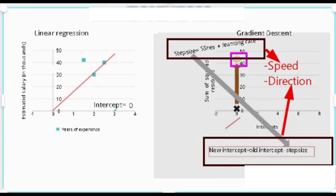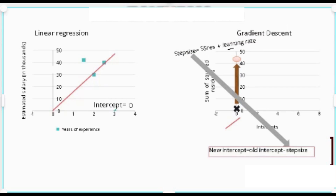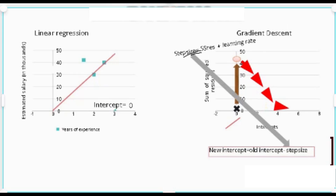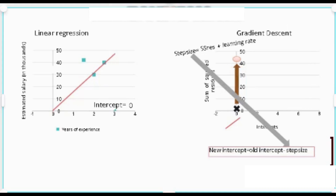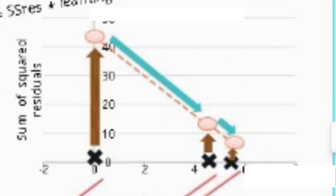Now let's talk about learning rate. Selecting an optimum value for the learning rate is essential. Either we can take small steps, but convergence will take forever, or we can take huge steps, but we might overshoot the point of convergence. Therefore, our learning rate must be adaptive — larger steps when we are far from convergence and smaller steps when we are near.